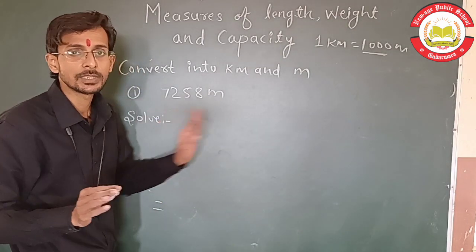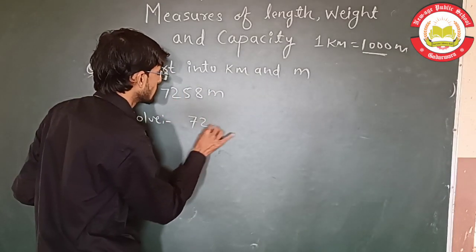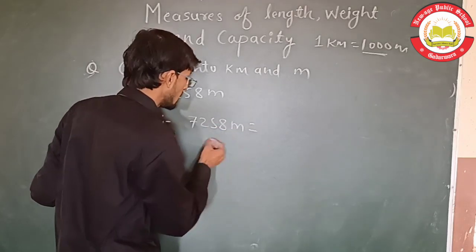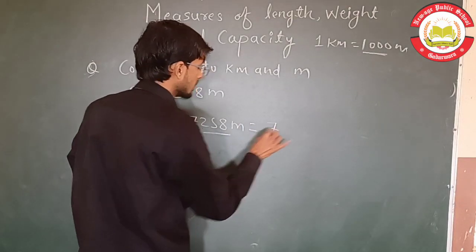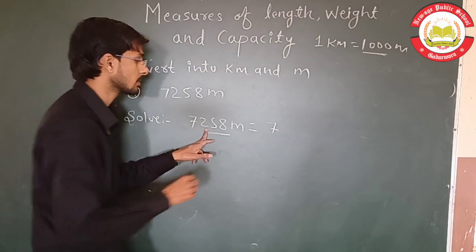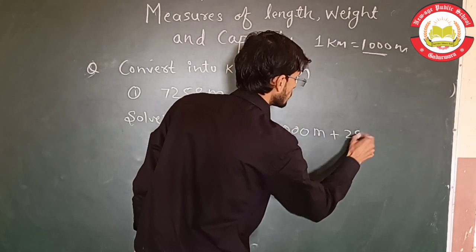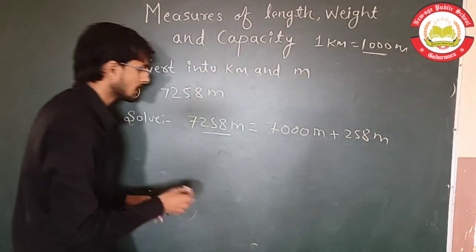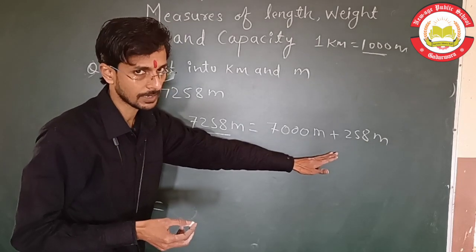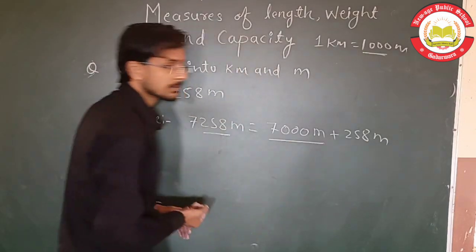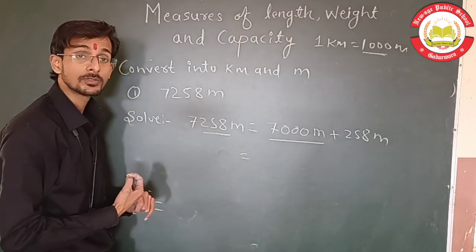Students, convert 7223 meters into kilometers and meters. We distribute it: 7000 meters plus 223 meters. We got this by separating the last three digits — the last three digits represent the meters portion. So 7000 meters, which comes from the km chart, equals 7 km.